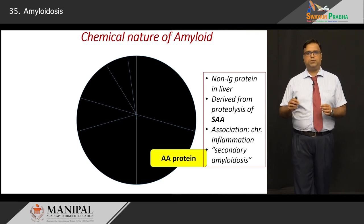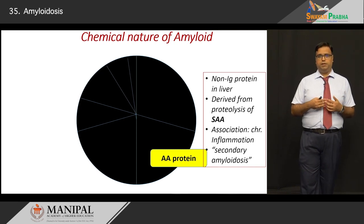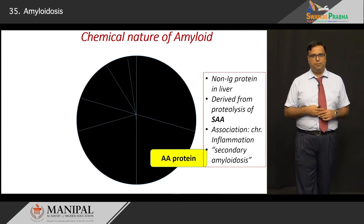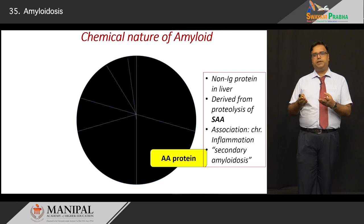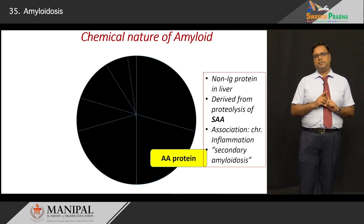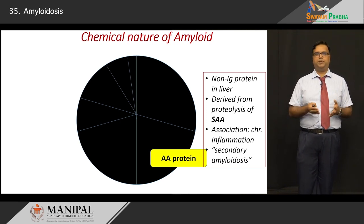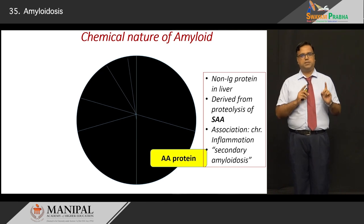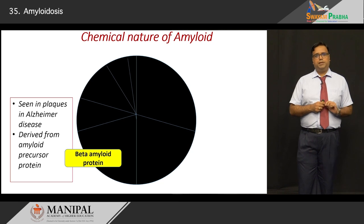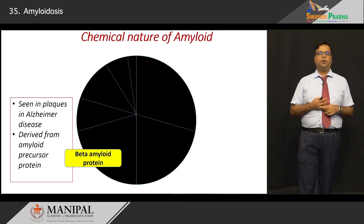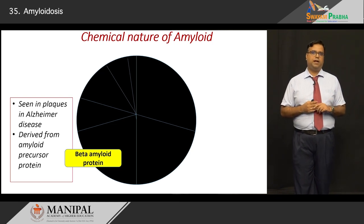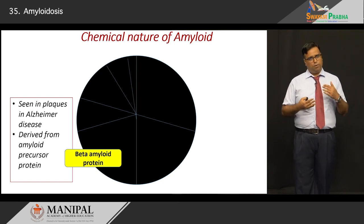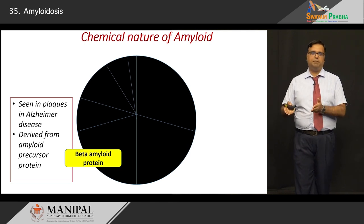In contrast, AA or amyloid-associated protein is non-immunoglobulin. It is derived from the liver — a large molecule of about 12,000 daltons called serum amyloid-associated protein (SAAP). There is selective proteolysis of this larger parent molecule, producing the AA amyloid derivative, which is largely associated with chronic inflammatory diseases — sometimes called secondary amyloidosis. Beta-amyloid protein, our understanding of which comes mainly from autopsies, is found in CNS plaques especially in Alzheimer's disease — at the core of neurofibrillary tangles and plaques. It is also synthesized from a larger precursor molecule.